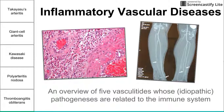This is a brief overview of five vasculitides whose idiopathic pathogenesis are related to the immune system. Vasculitides is just the plural form of the word vasculitis, and we're going to be talking about five forms of vasculitis that come from problems with the immune system.